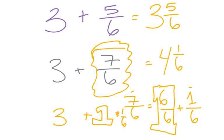So either way, if you have a proper fraction, you can just combine them. If you have an improper fraction, change it to a mixed number, and then combine your whole numbers, and tack on that fraction at the end.